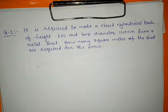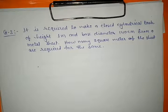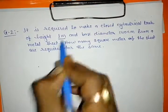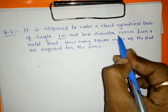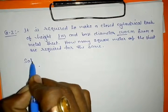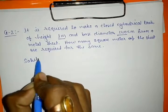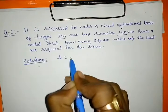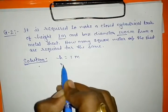It is required to make a closed cylindrical tank of height one meter and diameter 140 centimeter from a metal sheet. How many square meters of the sheet are required? Given: height equal to one meter, diameter equal to 140 centimeter.